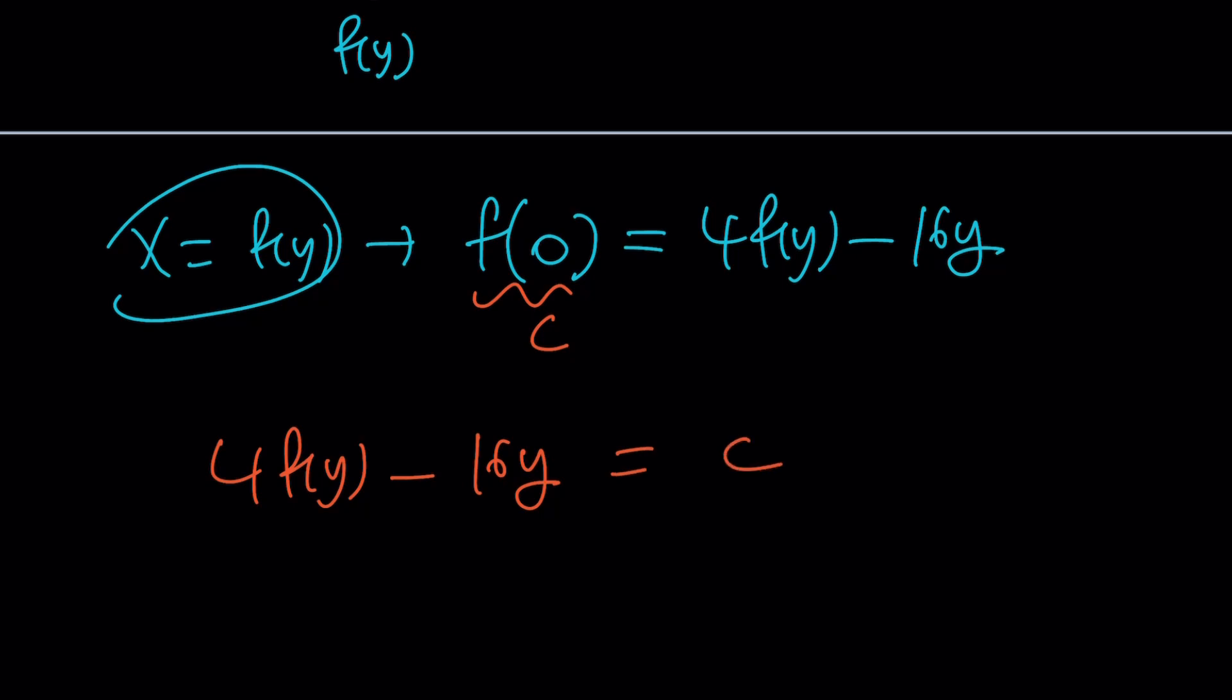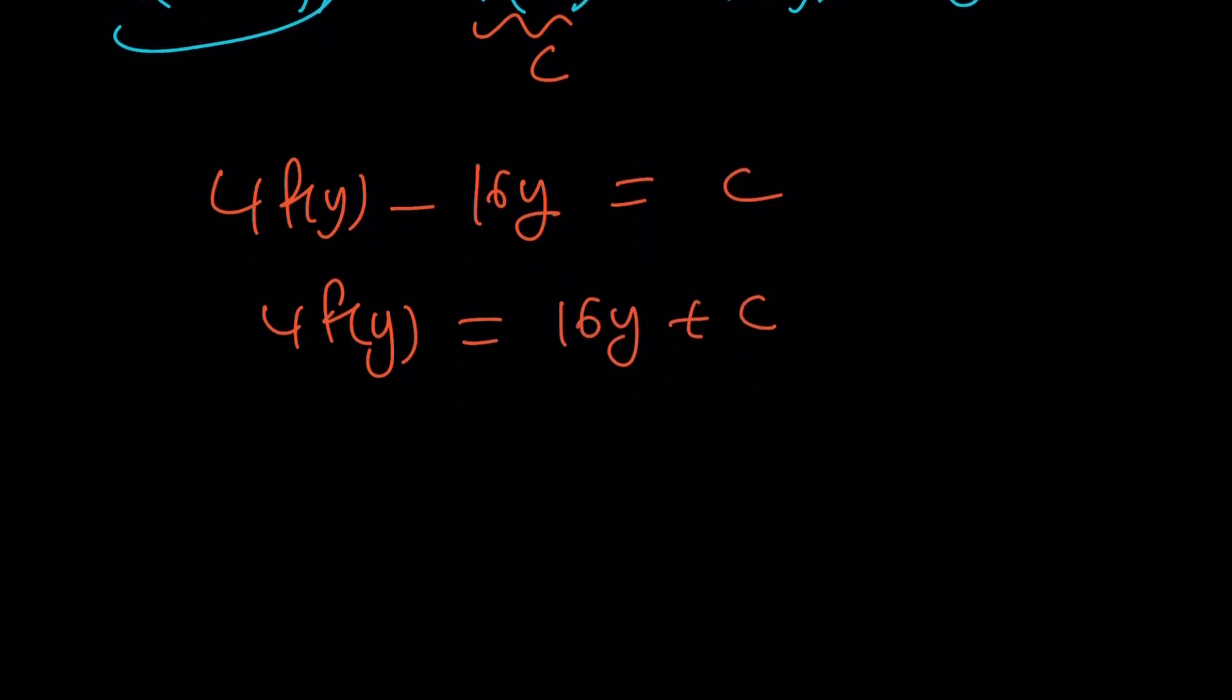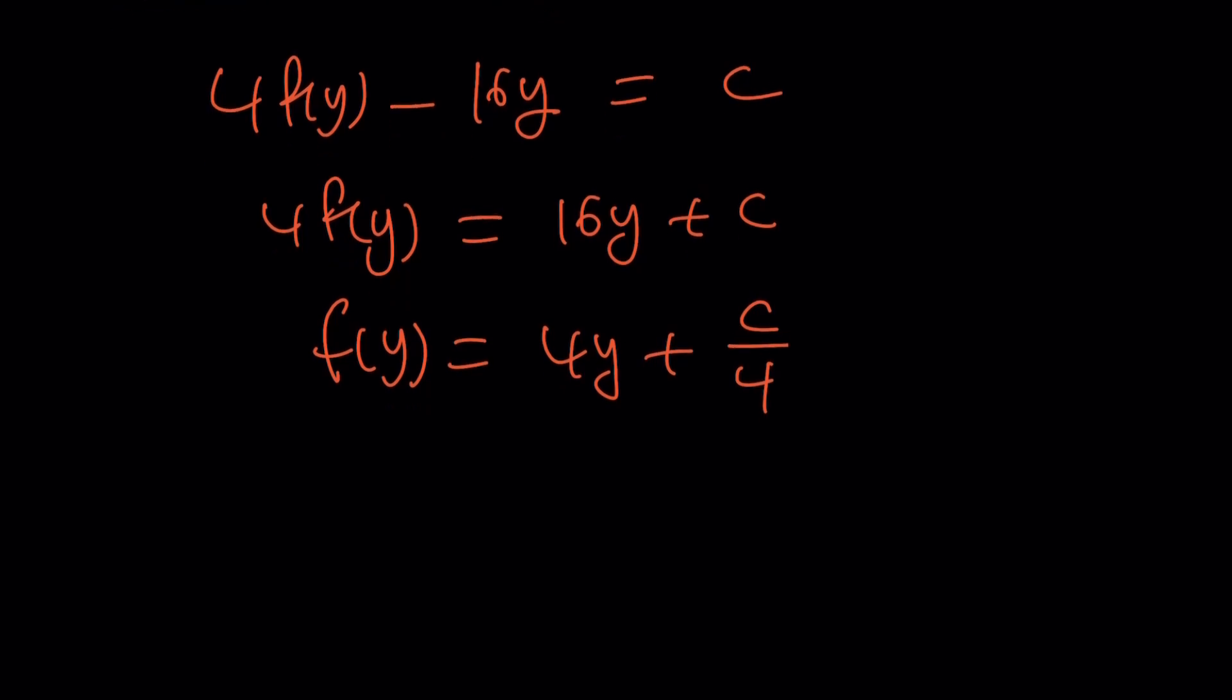But not so great, because I want to get f(y) from here. Let's go ahead and add 16y to both sides. Then, we get this. And, of course, since we want to get f(y) by itself, let's divide both sides by 4. And, of course, this is going to be c divided by 4, which is another constant. You can call it k if you want, but that's no big deal. Now, what am I going to do with this? Did I get f(y)? Well, sort of, but there's an unknown constant. I need to determine the value of c.